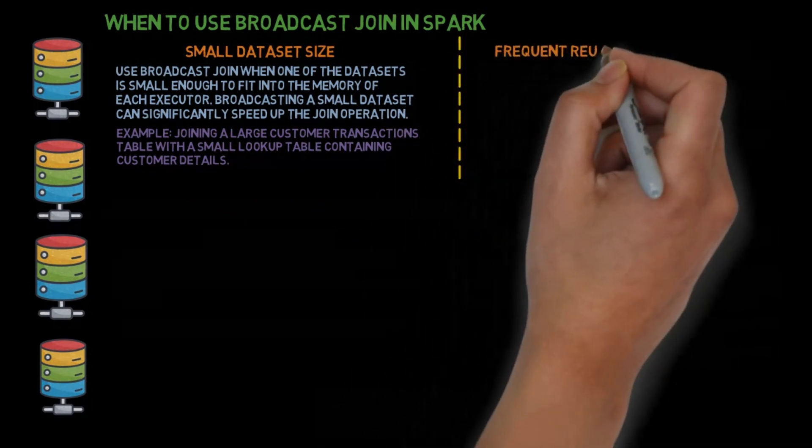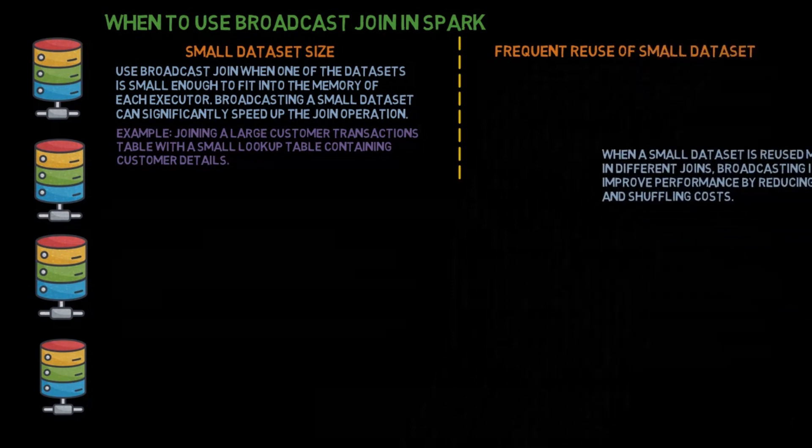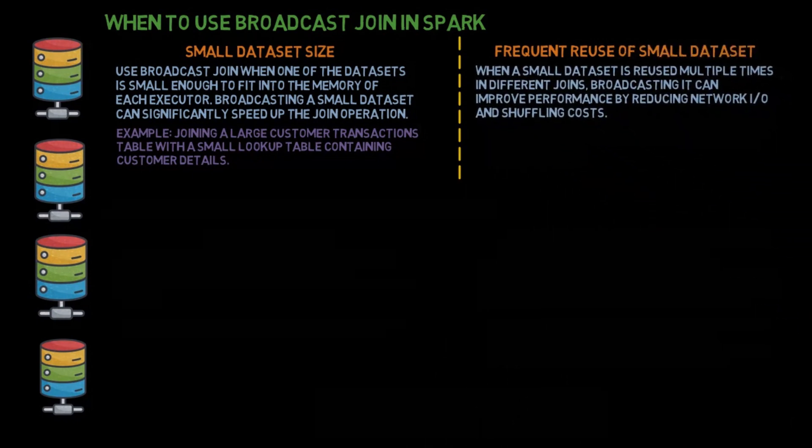Frequent reuse of small dataset: When a small dataset is reused multiple times in different joins, broadcasting it can improve performance by reducing network I/O and shuffling costs. Example: A small configuration or reference table that needs to be joined with multiple large datasets.